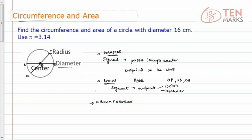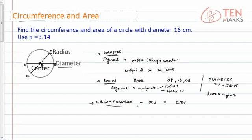The circumference of a circle is given by the formula pi times D, or 2 times pi times R. That's because diameter is 2 times R. The diameter of a circle is always 2 times the radius, which also means the radius is half of the diameter. The formula for area of a circle is pi times R squared, where R is the radius.